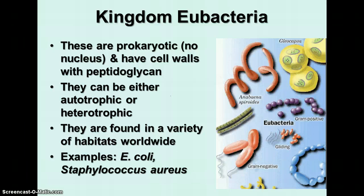Kingdom Eubacteria: these are also prokaryotic and have cell walls with peptidoglycan. They can be either autotrophic or heterotrophic, and are found in a variety of habitats. Examples are E. coli, Staphylococcus aureus — which causes staph infections — various Streptococcus species, which cause strep throat, and so forth. These are the bacteria you normally come in contact with — the ones that live in your environment, on your skin, in your body, and so forth.